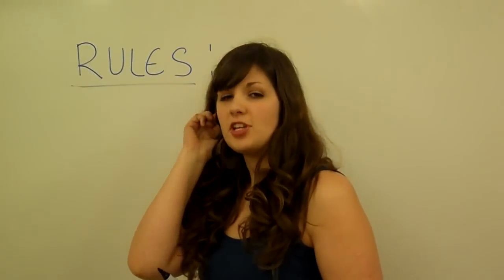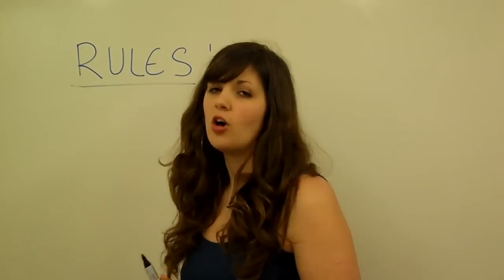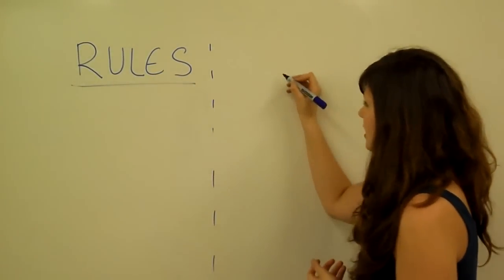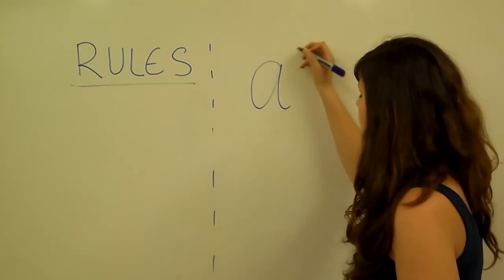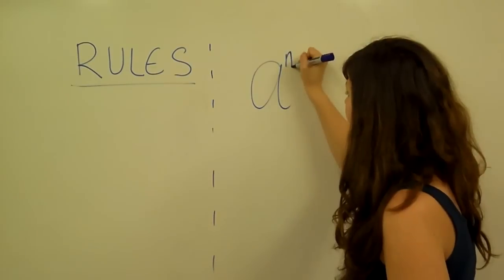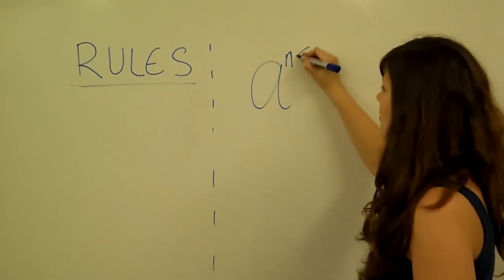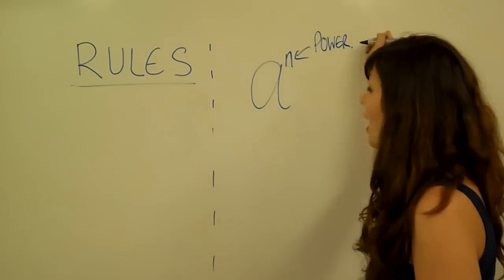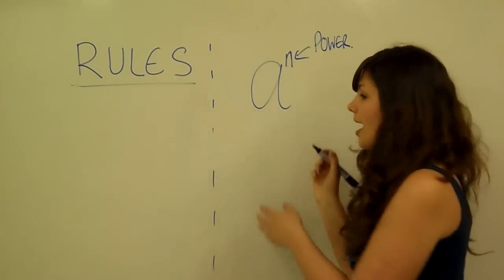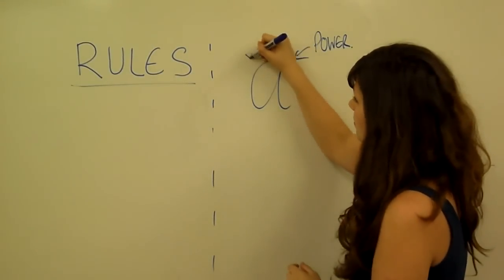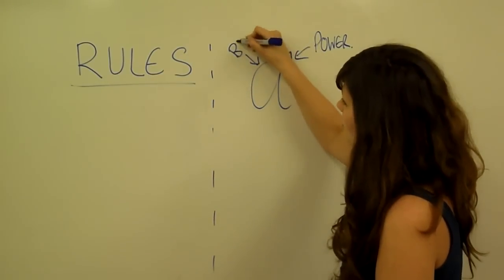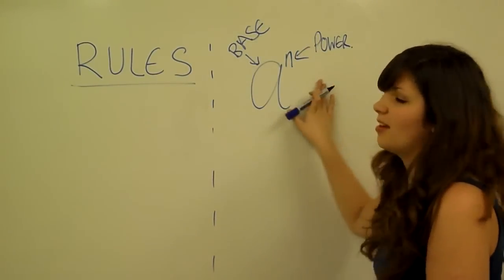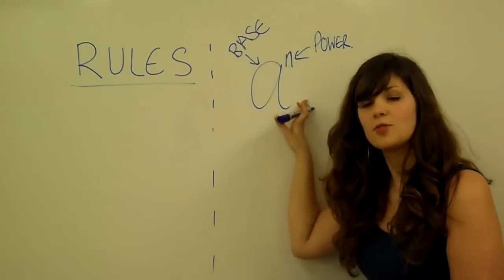Today I'm going to be giving a brief video tutorial on indices, or powers as they're sometimes called. That's basically when we have something in the form A to the power of N, where this number is what we call our power, and this number on the bottom is what we call our base. So a power is anything written in this form.